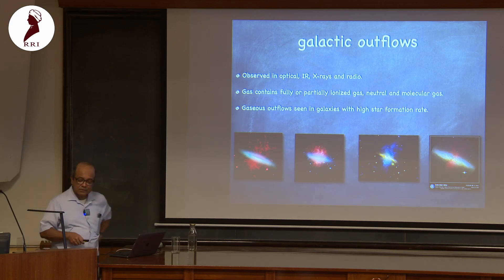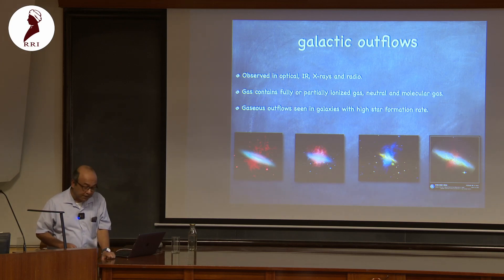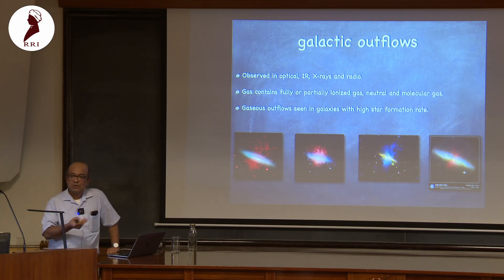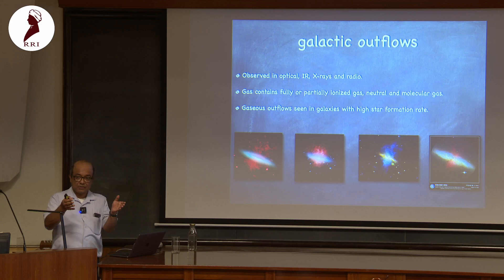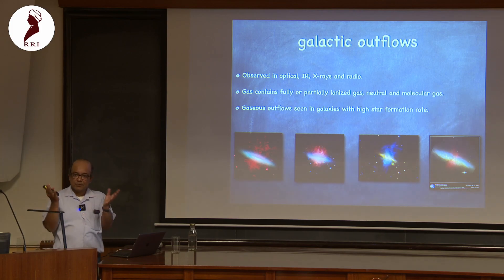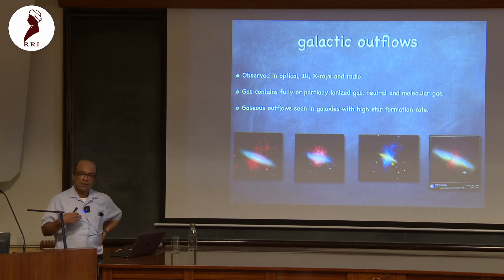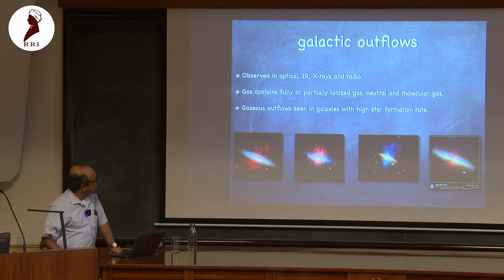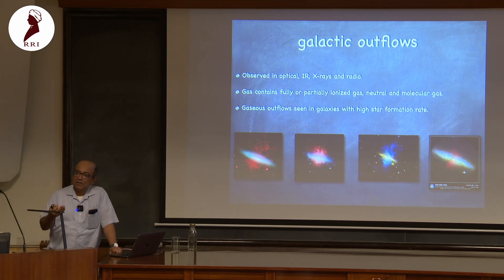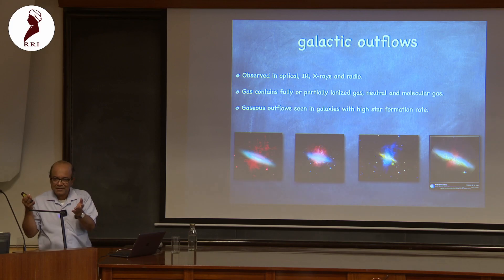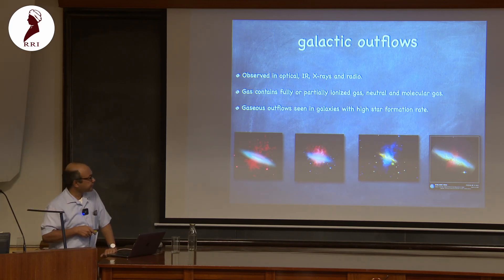These outflows are seen mostly in galaxies where the star formation rate is very high. M82, for example, is a smaller galaxy than ours — we know this from its rotation curve, just as studying Earth's rotation speed gives clues about the Sun's gravitational field. The rotation speed of stars in a galaxy tells us the depth of the potential well. M82 has a star formation rate of about 10 solar masses per year — much higher than the Milky Way.